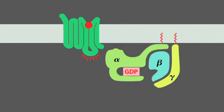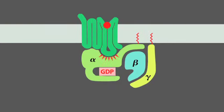In some cases, the inactive G-protein is associated with the inactive receptor, while in other cases, as shown here, it only binds after the receptor is activated.